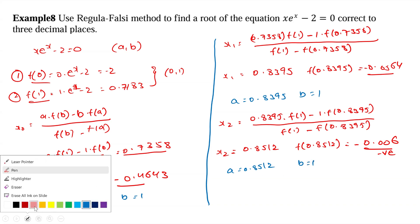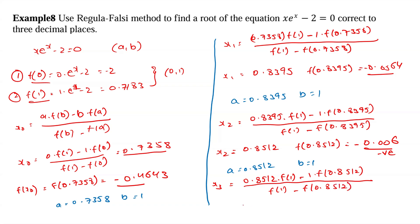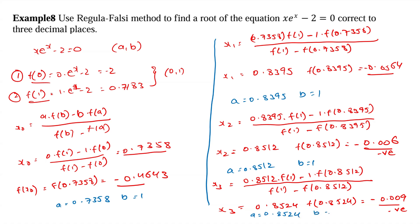Now we need to calculate x3. x3 is equal to 0.8512 into f(1) minus 1 into f(0.8512), divided by f(1) minus f(0.8512). It is equal to x3 is equal to 0.8524, and f(0.8524) is equal to minus 0.009. Here also we got a negative value, so a becomes 0.8524 and b remains 1.